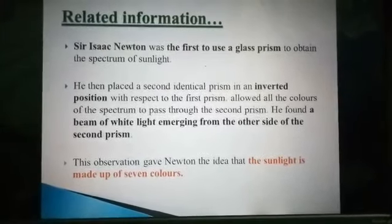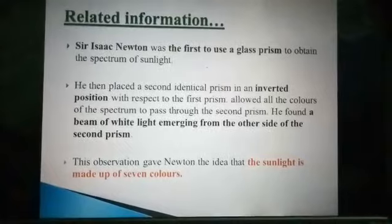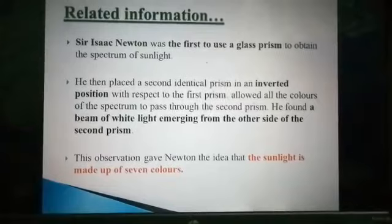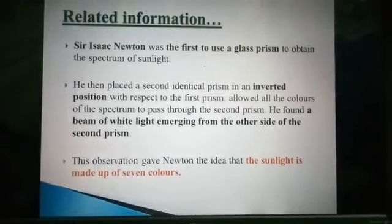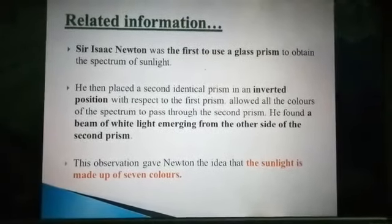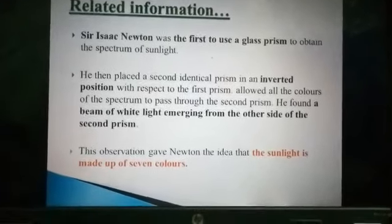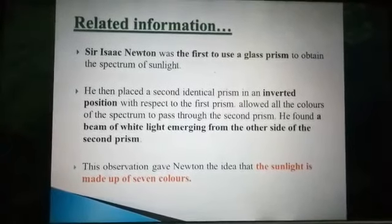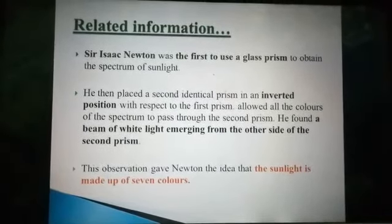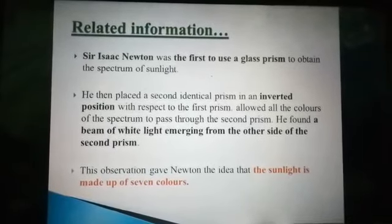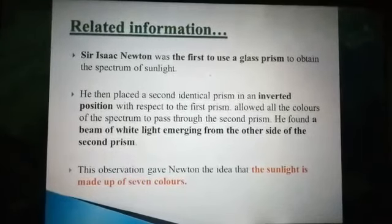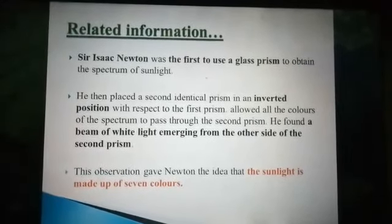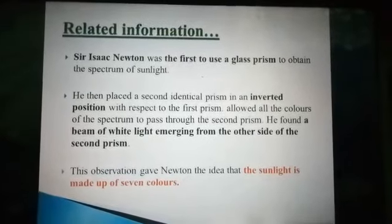Newton was the first to use a glass prism to obtain the spectrum of sunlight. He then placed a second identical prism in an inverted position with respect to the first prism and allowed all colors of the spectrum to pass through the second prism. He found a beam of white light emerging from the other side of the second prism.